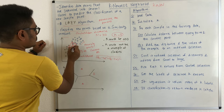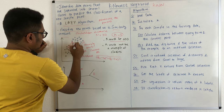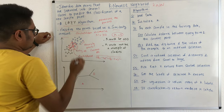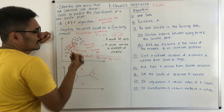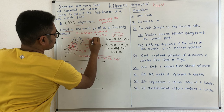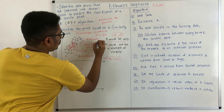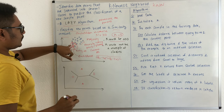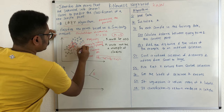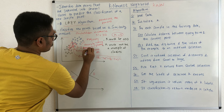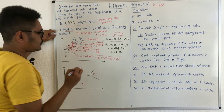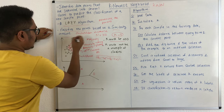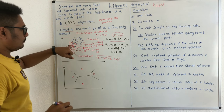For example, if you have this query point and you have two blue points and one black point as neighbors, a majority voting scheme determines the label. Here blue wins since there are two blue points and only one black point as neighbors, so this query point would be assigned the class label blue.